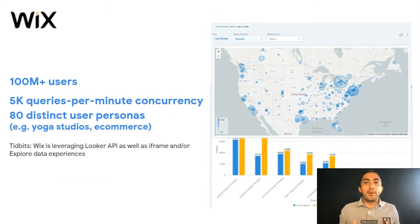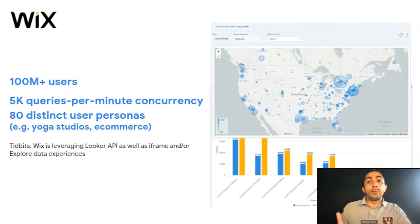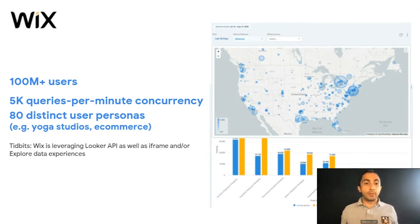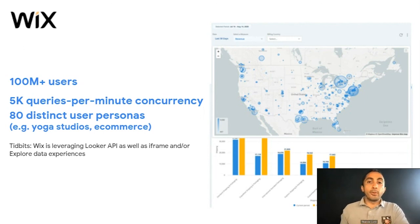We wouldn't fully understand why the Looker API is so powerful without understanding the scale. Thanks to Wix — a platform to build websites — they chose Looker to fuel their insights capabilities: visitor analytics, sales analytics. And Looker, born in the cloud for the cloud, is able to scale geographically, vertically, and horizontally. Wix deployed a full analytical solution within their product to scale across millions of users, handling high traffic and a huge number of concurrent queries.